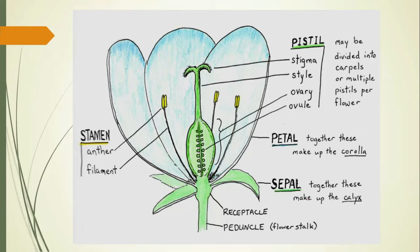Let's take another look through the whorls. The sepals are the leaf-like structures that protect the bud, and they make up the whorl known as the calyx — so all the sepals together make up the calyx. The petals are the showy parts; they're very leaf-like but mostly function to attract pollinators. Sometimes they're really big, and other times they're hardly even seen. But they make up the whorl known as the corolla.